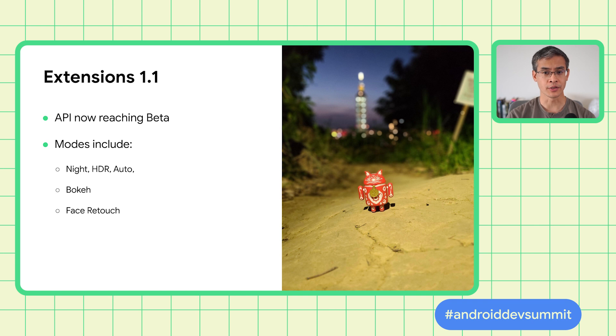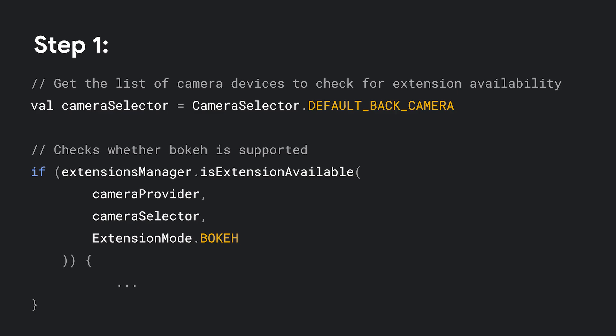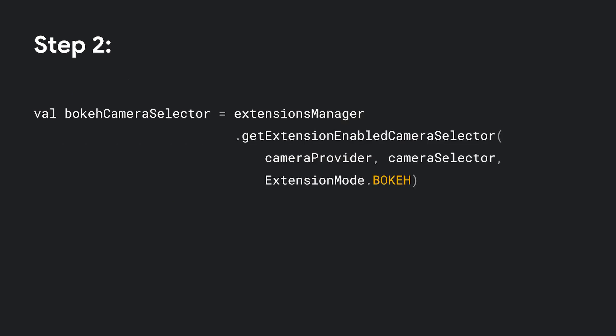Let's take a look at using the extensions API. First, we'll create a camera selector for selecting the default back camera. Next, we can use the extensions manager's isExtensionAvailable to check if an extension would be supported by a selected camera. In this example, we query if bokeh is available on any back-facing camera. Then we create an extensions camera selector, providing our camera selector and specifying the bokeh mode. The bokeh camera selector will now search for back-facing cameras that support bokeh.